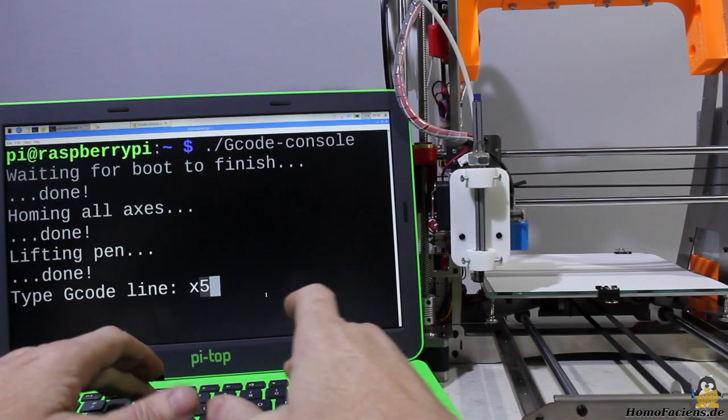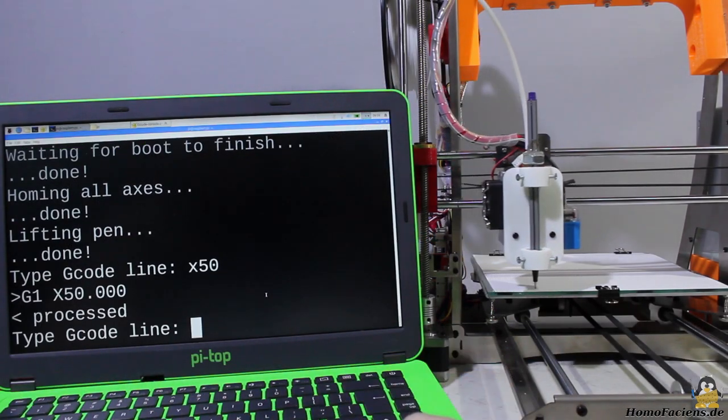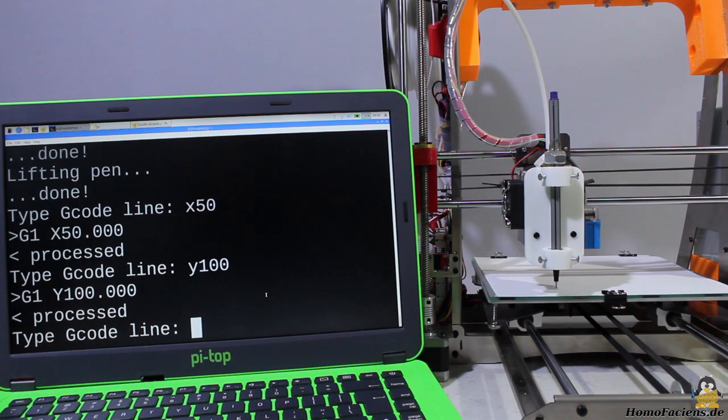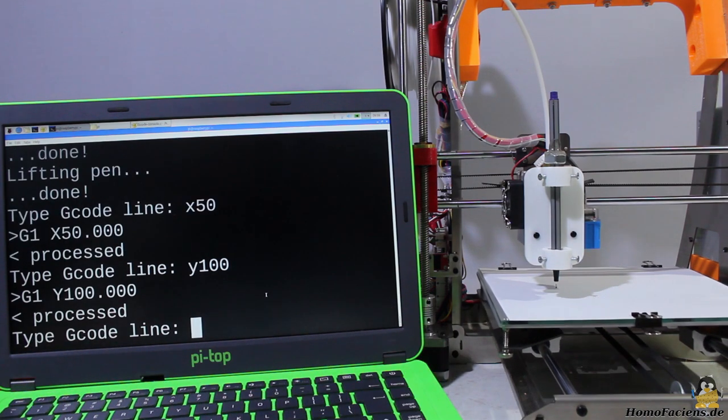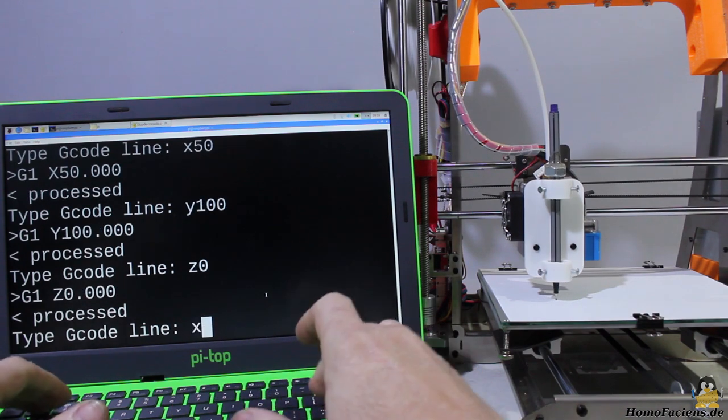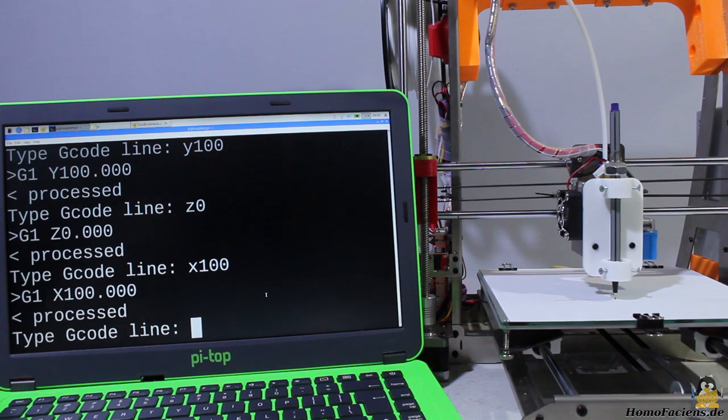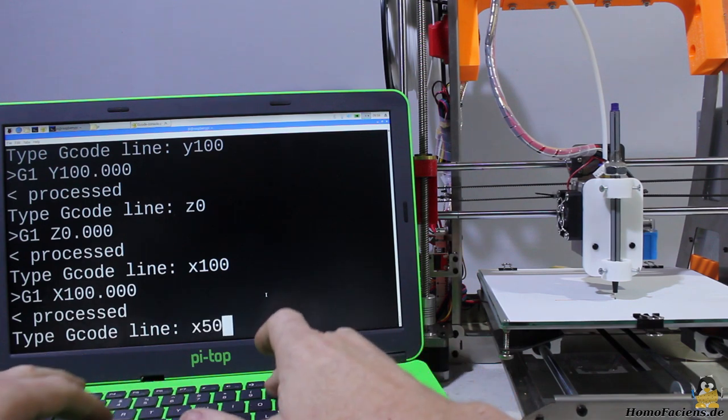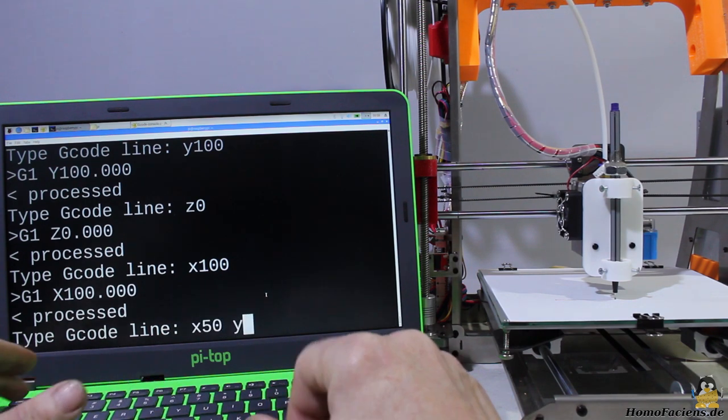You can access the printer through USB as well. Here I am sending G-code lines directly to the printer using a tiny command line program. With that you can transmit coordinates to the plotter, which is a nice demonstration of the working principle of CNC machines and a practical application for math.